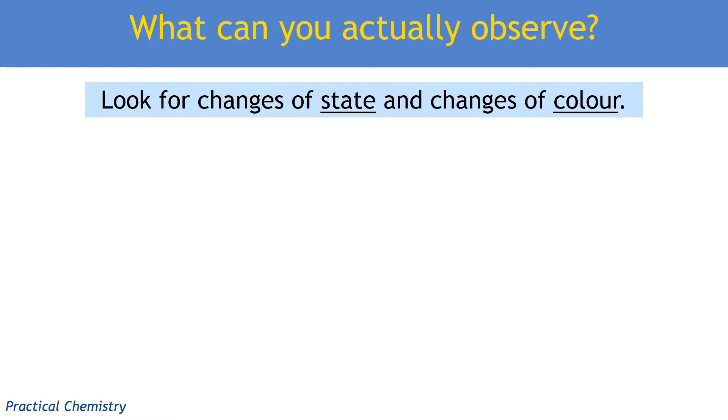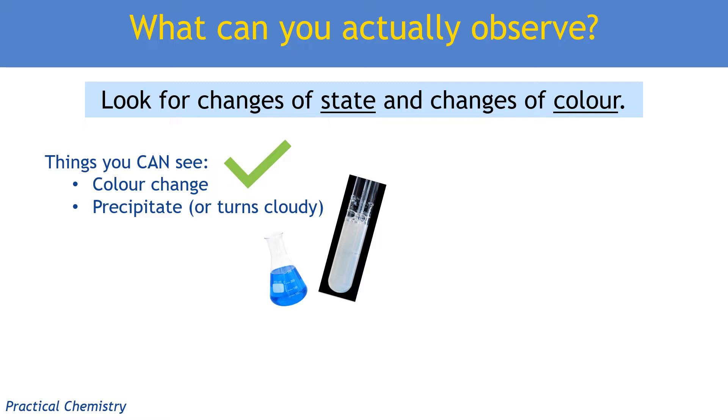So what can you actually see, which means that you can actually say it's an observation in an exam question? Well, you can see a colour change, for example if a solution turns blue from colourless. You can see precipitate, you may also describe this as turning cloudy, for example lime water and carbon dioxide, but it is still a precipitate. It's a solid that is forming in a solution or in a liquid. You might see bubbles or fizzing. You can see solids disappearing.